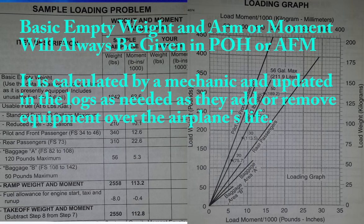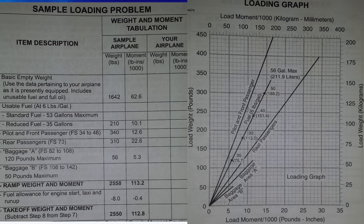So for this method of using the loading graph, we're simply going to find our weight. Say for example, the weight of our pilot and front passenger, 340 pounds. Find that line that says pilot and front passenger. Follow that line up to 340 and then draw a straight line down from that 340 mark. And we get our load moment over 1,000 pounds inches or 1,000 inch pounds. Basically, that's giving you an abbreviated moment. And so that's where they get their 12.6 from. Now, for fuel, same thing, 210 pounds of fuel on up the line, draw a line down and you get 10.1. So you can see how this method works.